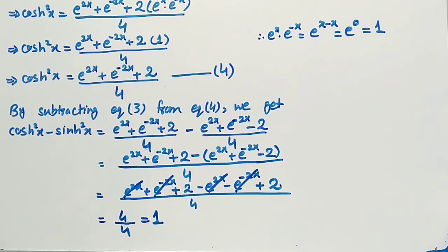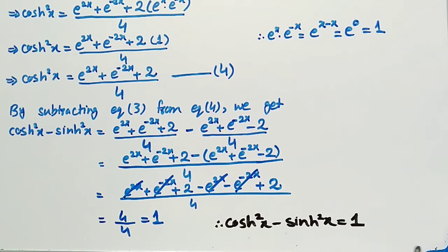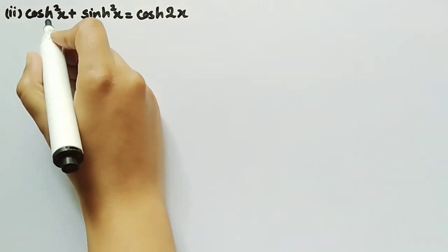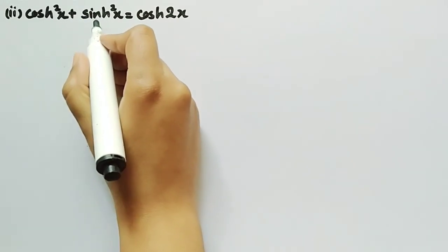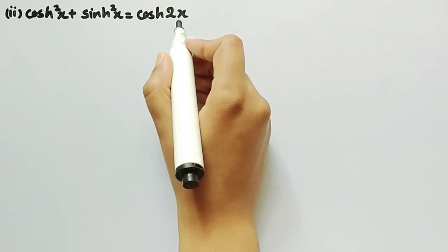Hence we have proved that cosh²(x) minus sinh²(x) is equal to 1, and this was the proof of the first identity. Now we will prove the second identity: cosh²(x) plus sinh²(x) is equal to cosh(2x).